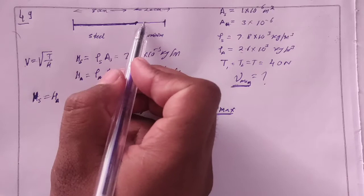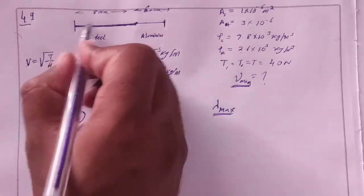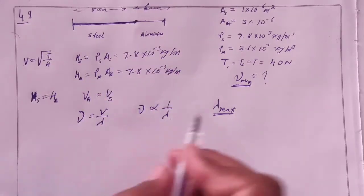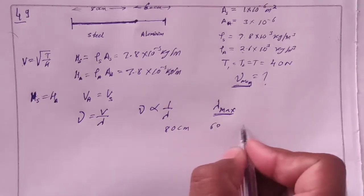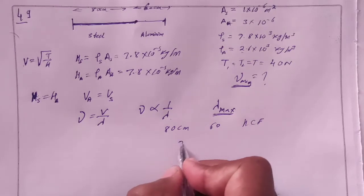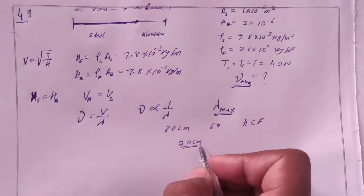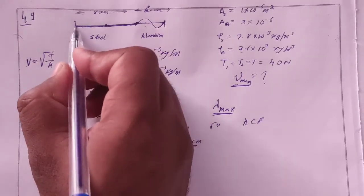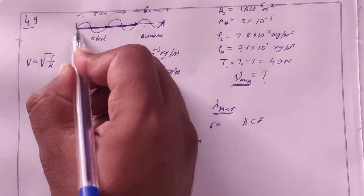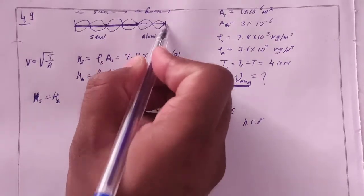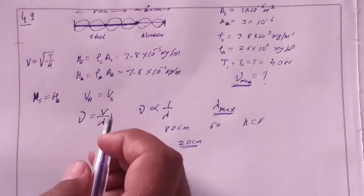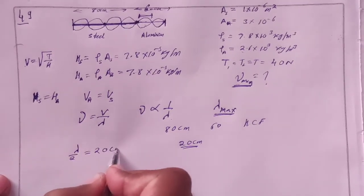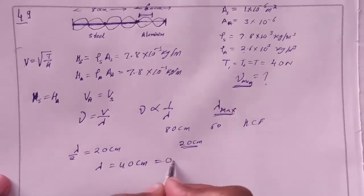Here is 80 cm and here is 60 cm. This one with the joint as a node. So this standing wave will be formed with nodes at both ends and at the joint. The loop distance, lambda by 2, is equal to 20 cm. So lambda is equal to 40 cm, which is 0.4 meter.